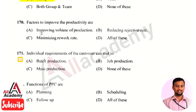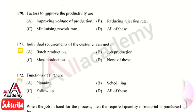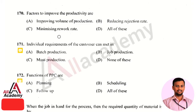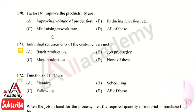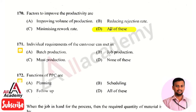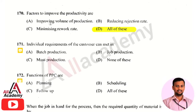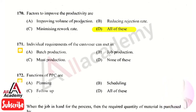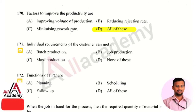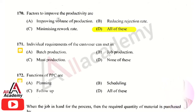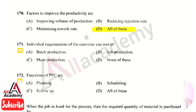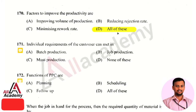The next question is: the factors to improve productivity are? The right answer is option 4, that is all of the above. The factors to improve productivity include improving the volume of production, reducing the rejection rate, and minimizing rework — all of which enhance productivity.